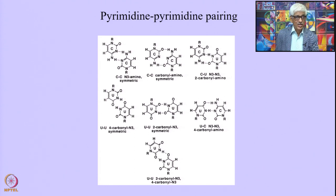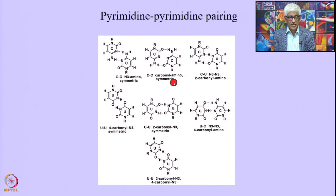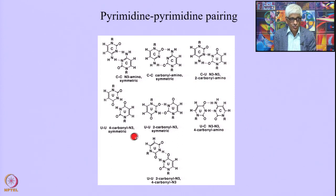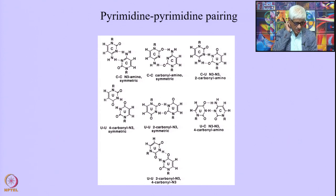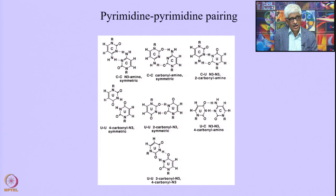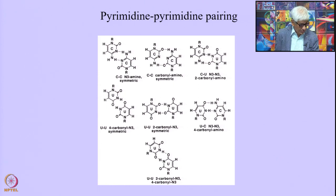Pyrimidine-pyrimidine base pairs are also possible: C-C amino symmetric, C-C carbonyl-amino symmetric, C-U pairing via N3-N3, U-U carbonyl-N3 symmetric, U-C N3-N3, and U-U hydrogen bonding. All of these arise because the nitrogens and carbonyl oxygens serve as acceptors, while the amino NH2 groups and NH protons serve as donors. Every base possesses such acceptors and donors, giving rise to this extensive variety of hydrogen-bonding schemes.